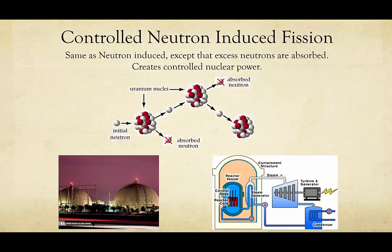We still want it to be a chain reaction — we don't want to have to set off conventional weapons constantly — but we don't want that exponential increase. So we set up a system where, after the initial neutron bombardment, not all of the neutrons are allowed to move forward. We absorb or block some neutrons so they cannot go on to cause more nuclei to undergo fission. The way we do this is with what we call control rods. The control rods absorb some neutrons, keeping the reaction going but preventing it from becoming exponential.